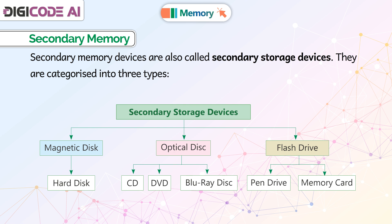They are categorized into three types of secondary storage devices: Magnetic Disc, which is further divided into hard disk; Optical Disc, which consists of CD, DVD, and Blu-ray disc; and Flash Drive, which includes pen drive and memory card.